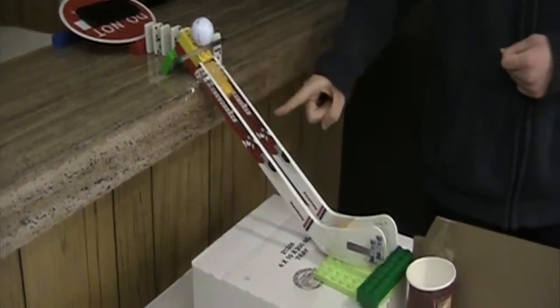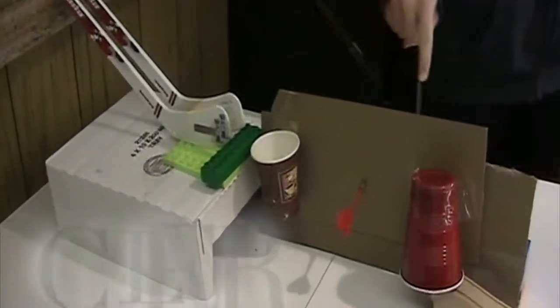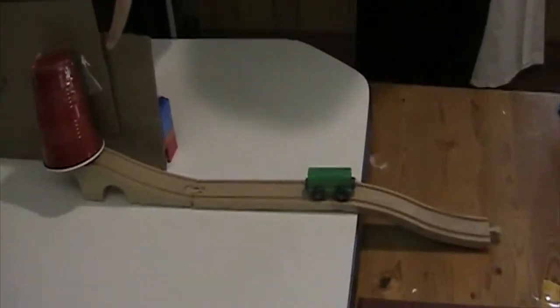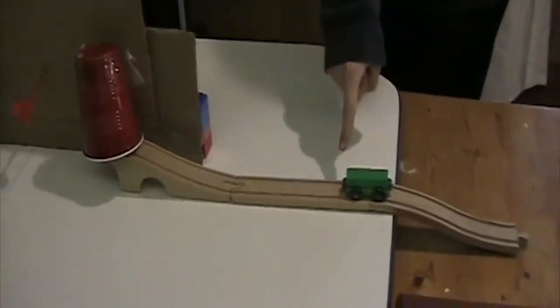This will send the golf ball down the ramp into the cup, and using this lever, send the cup up. Under there is a train with a magnet on it, sending it over here.